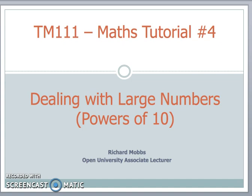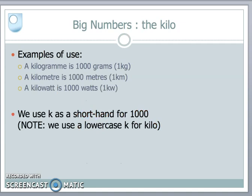Today we're going to be looking at dealing with large numbers, and in particular large numbers involving the number 10. In our everyday life we meet a lot of this. We might buy things in kilograms — a kilogram meaning a thousand grams. Whenever we travel a distance, we might travel in kilometres — a thousand metres. And power, like an electric fire, we might talk about in kilowatts — a thousand watts. Notice we're using the lowercase letter K as shorthand for a thousand.